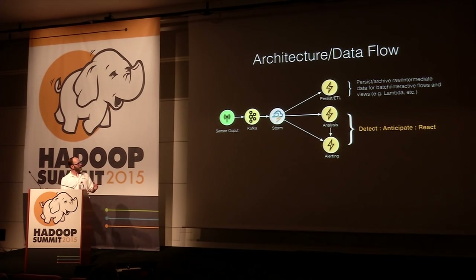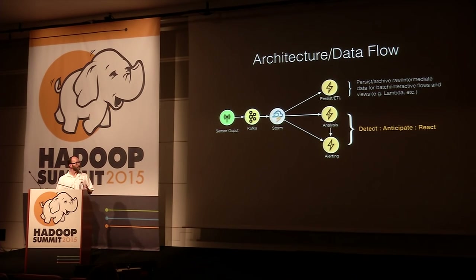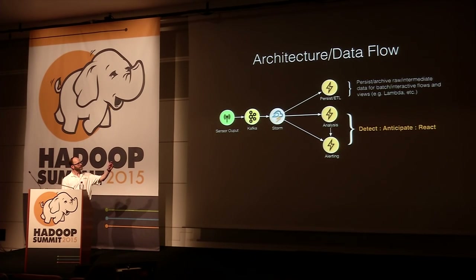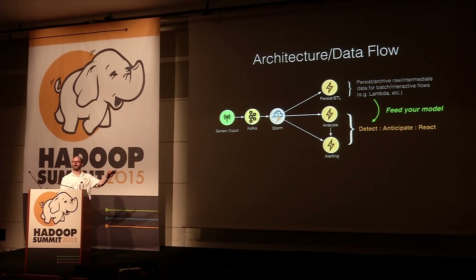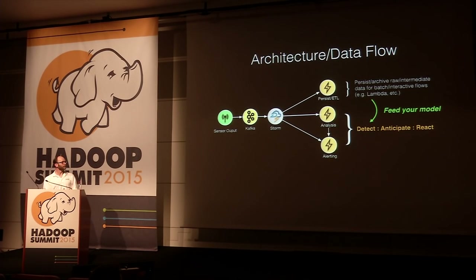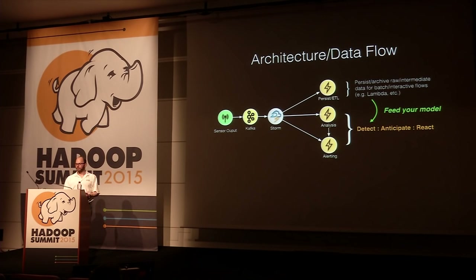Once data enters Storm, you typically have a Storm Bolt that persists raw and intermediate data for batch and interactive flows. In the real-time analytics path, that's where your detect, anticipate, and react flows go — and where you feed your model, whether it's a machine learning model or something like populating lookup tables.